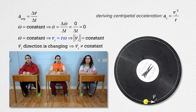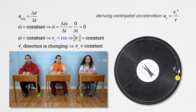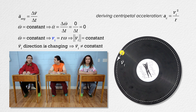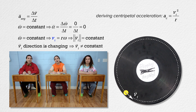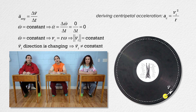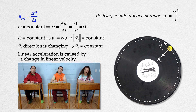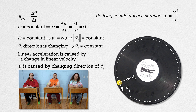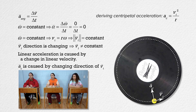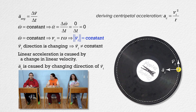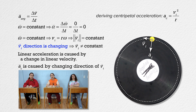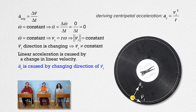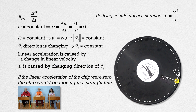That equation is actually the magnitude of tangential velocity equals radius times the magnitude of angular velocity, so technically it is tangential speed, not tangential velocity. The length of the tangential velocity arrow stays the same; however, the direction the velocity vector is pointing changes as the chip moves around the circle. Going back to the equation for average linear acceleration, centripetal acceleration must be the result of the change in direction of the tangential velocity. If the acceleration of the chip were zero, the chip would not be moving in a circle — it would be moving in a straight line.